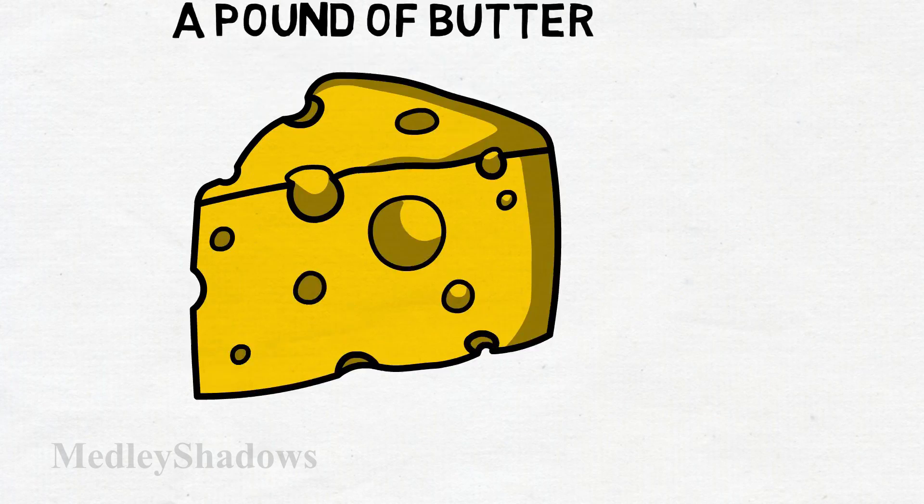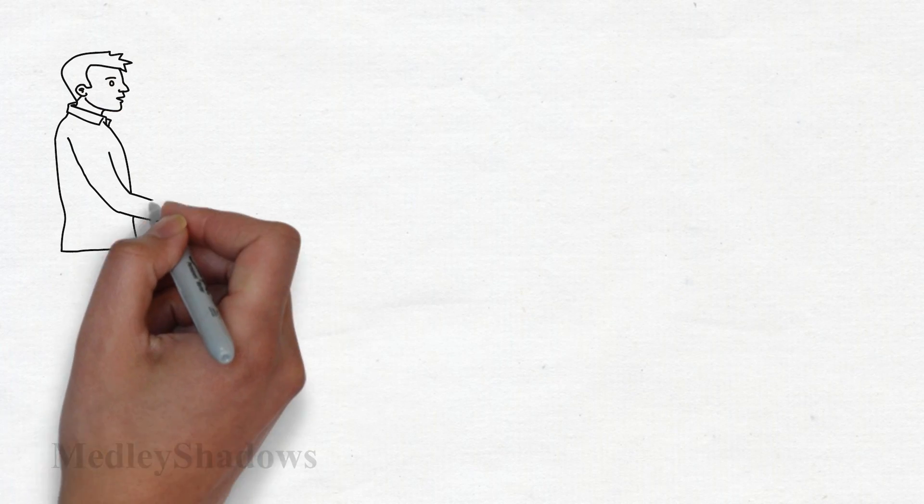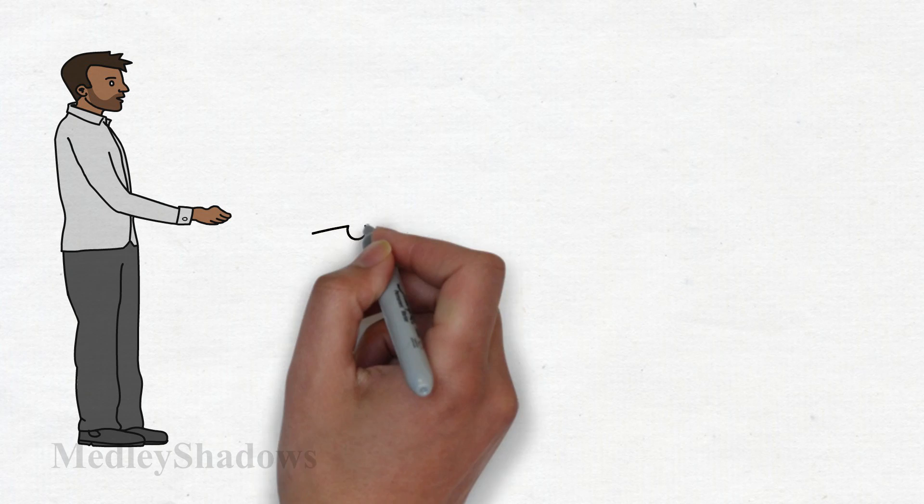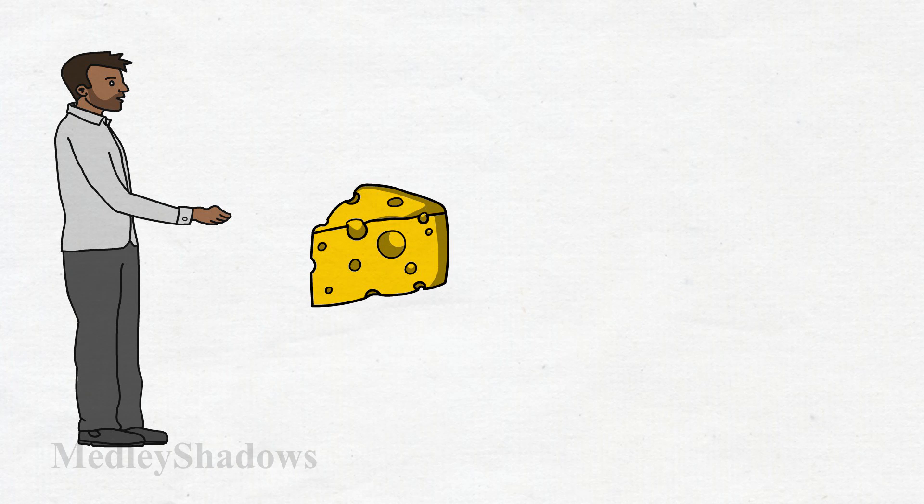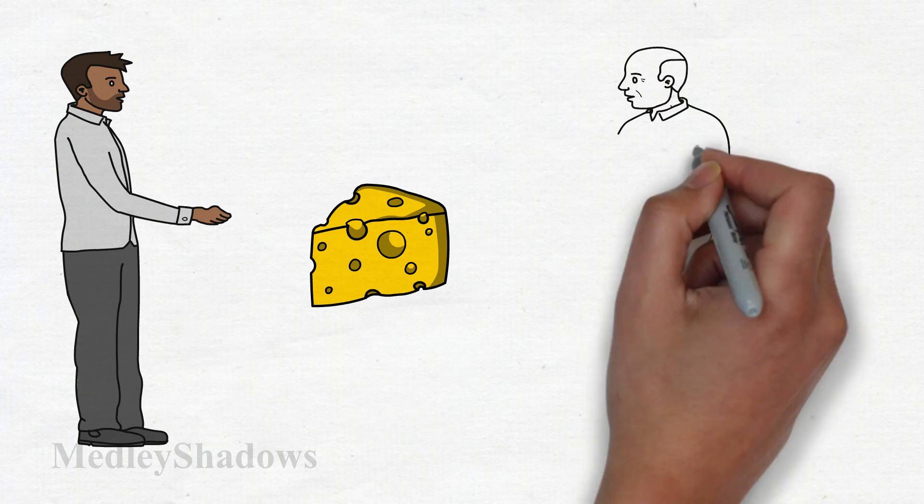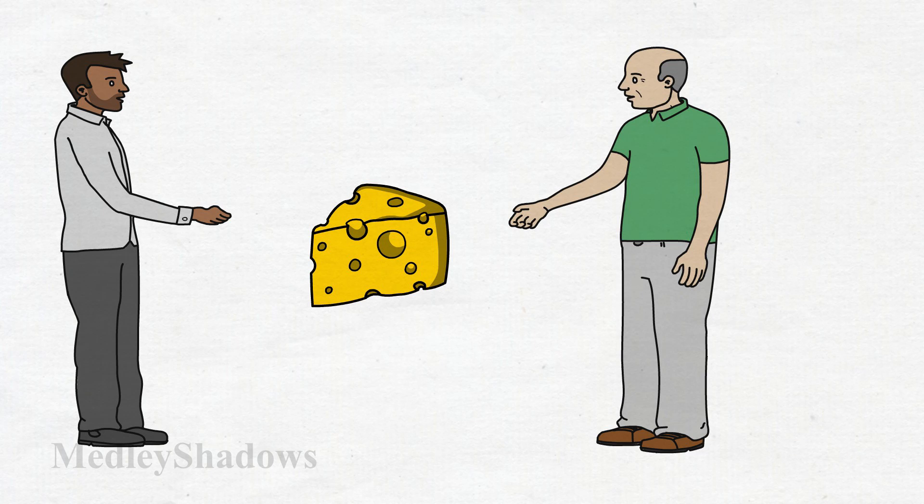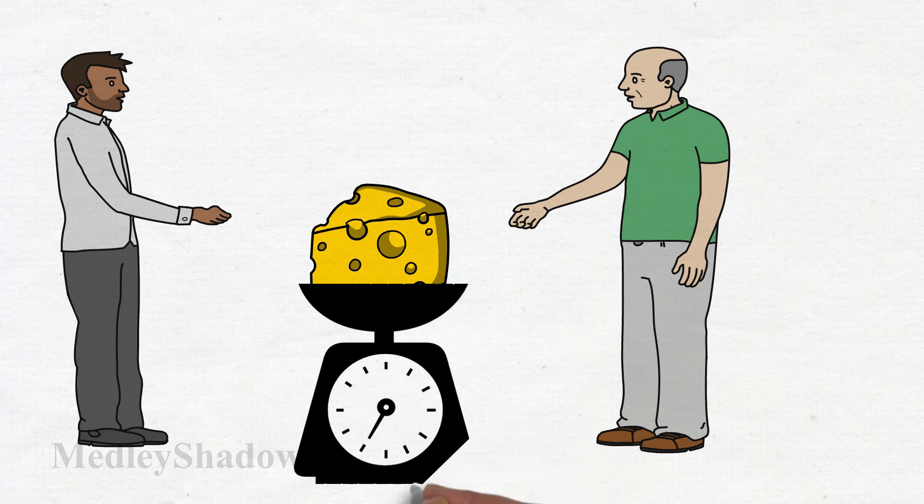A pound of butter. There was a farmer who sold a pound of butter to a baker. One day the baker decided to weigh the butter to see if he was getting the right amount, which he wasn't.